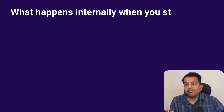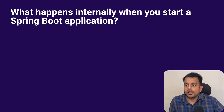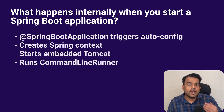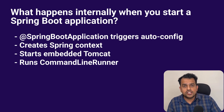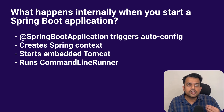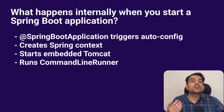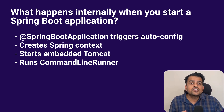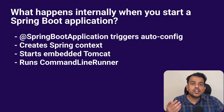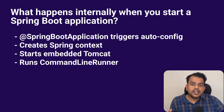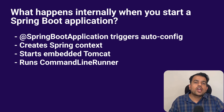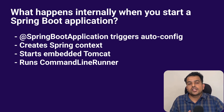Let's start the video. The interview started with a Spring Boot question: what happens internally when you start a Spring Boot application? You can answer that when we run the main class, the @SpringBootApplication annotation triggers auto-configuration and component scanning. It creates the Spring context, scans all the beans, and initializes dependencies automatically. Then it starts the embedded server — Tomcat by default — and deploys the application on it. Finally, it runs any CommandLineRunner or ApplicationRunner beans if present.